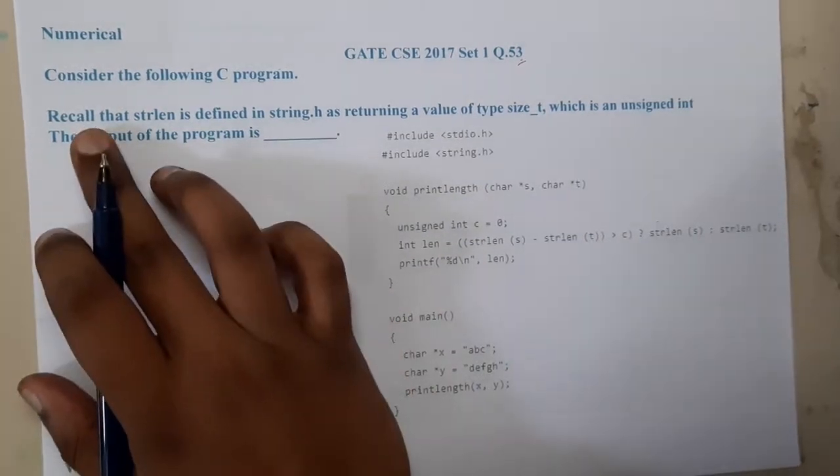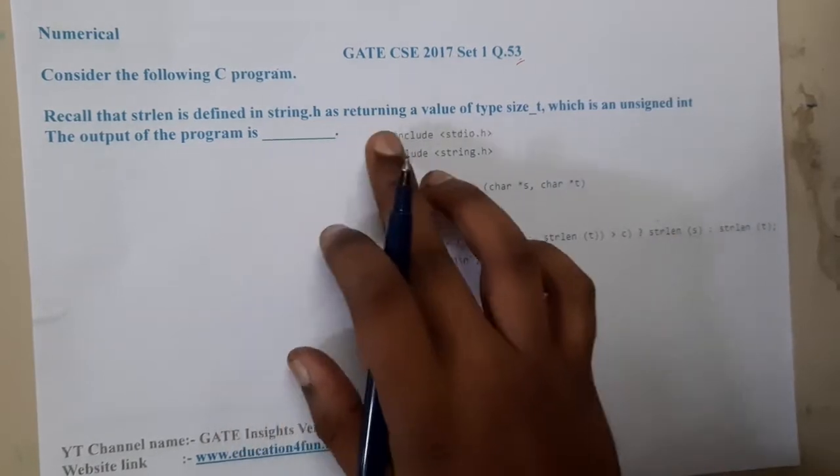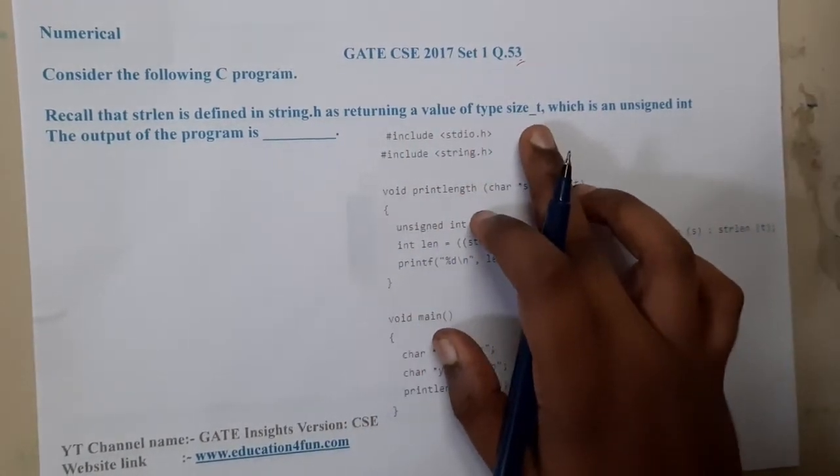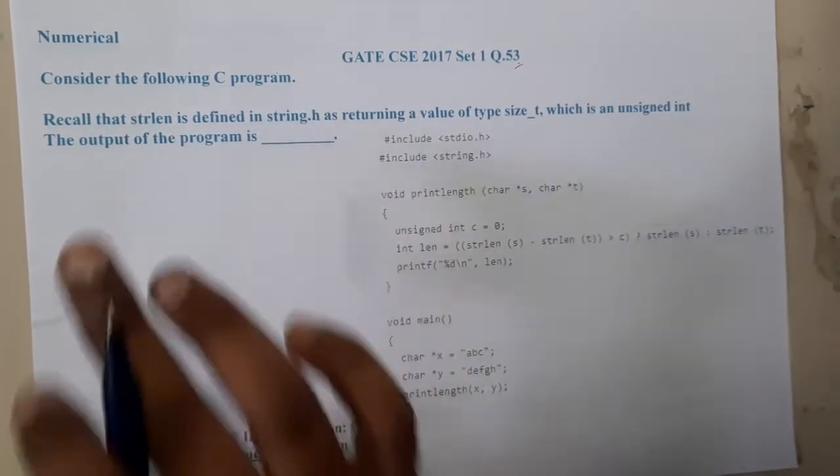Recall that strlen is defined in string.h. It will return a value of type size_t, which is an unsigned integer. The output of the program is... So basically we are expecting what is the output of this code.